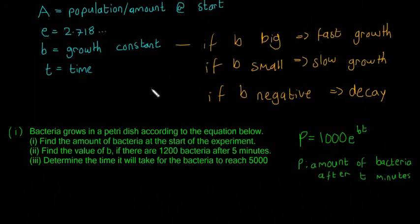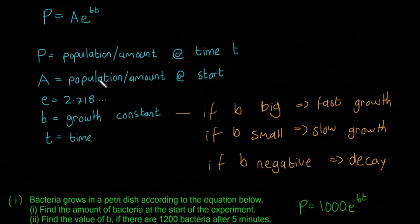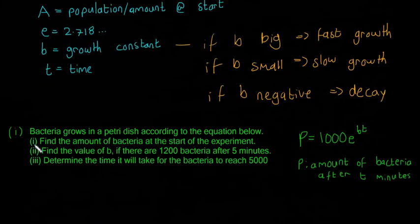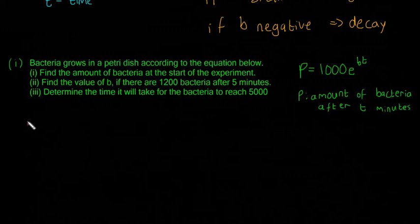Okay, so you may notice that it's exactly in the form P is equal to AE to the power of BT. In this case, A is equal to 1000. So that means the population at the start is equal to 1000. So we know that. We still can't write that just as the answer straight away. We can't write 1000. We have to prove it. But to prove it isn't too hard either.